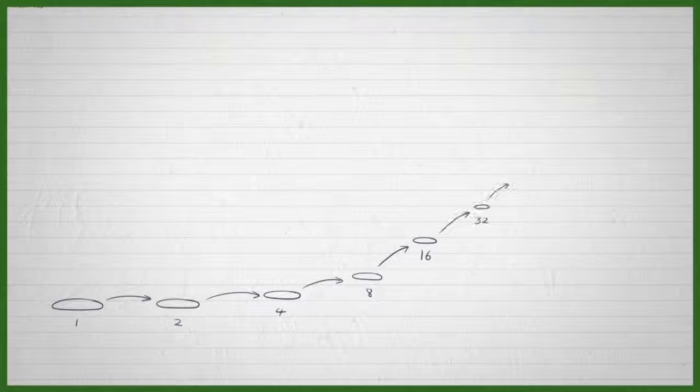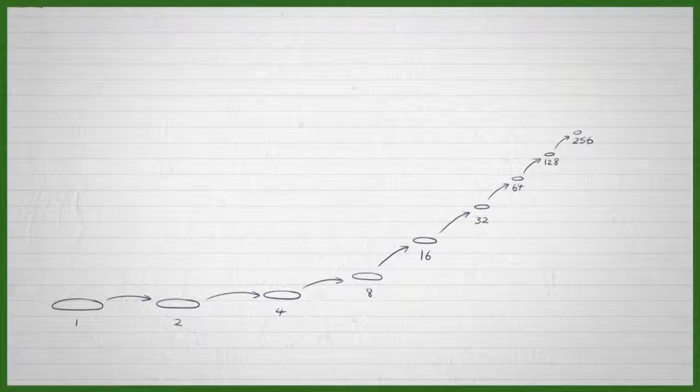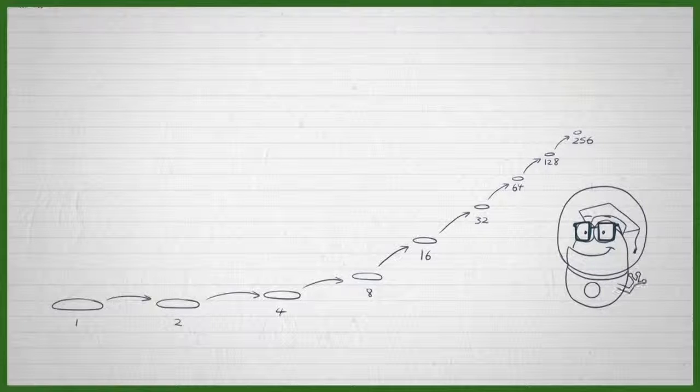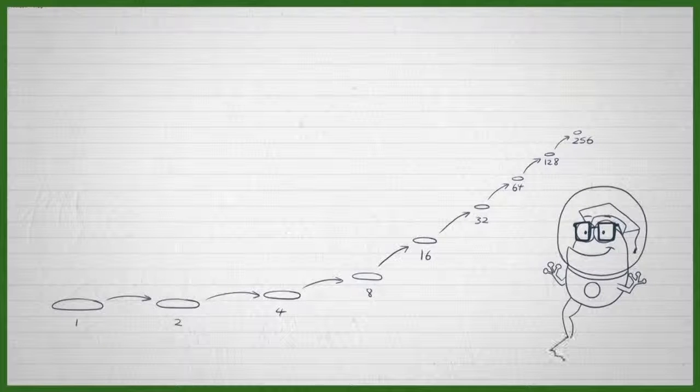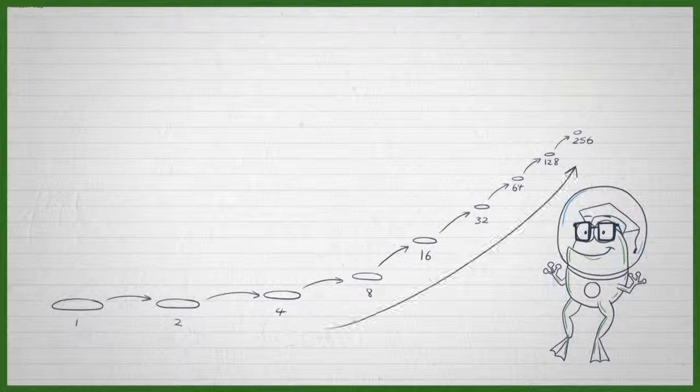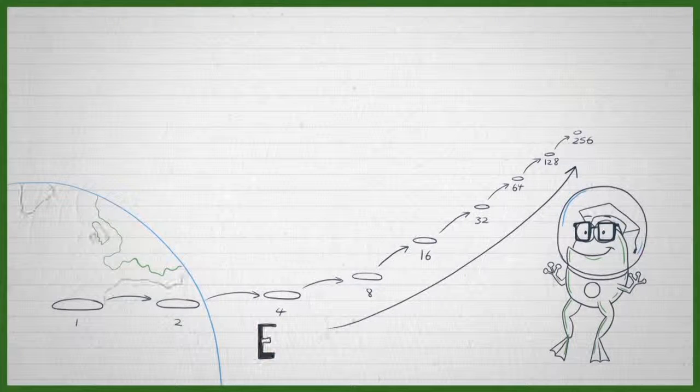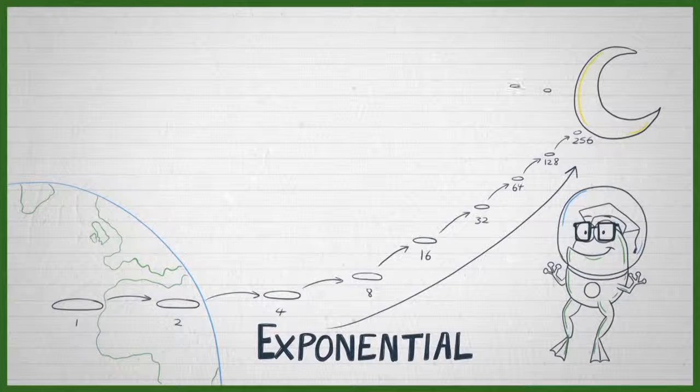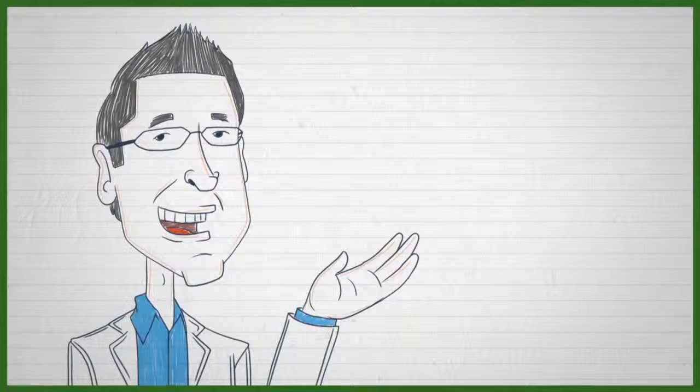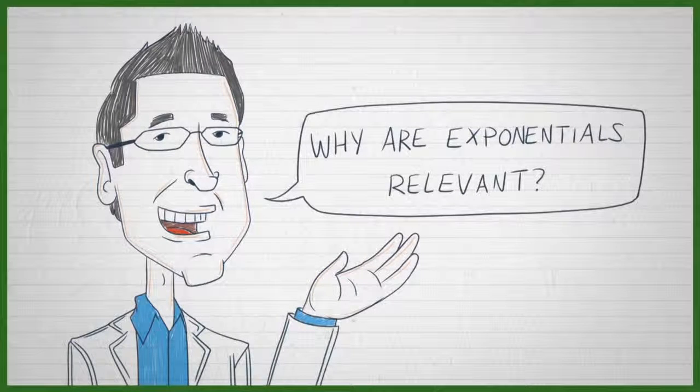If I take 20 steps in exponential space where each step is a doubling of the prior. Now it's 1, 2, 4, 8, 16, 32, 64, 128, 256. Each step I take doubles all of the steps that have been taken before. And guess what? 20 steps in exponential space gets us to? It gets us to the moon and back. I think it's fair to say that's not intuitive. But why is it relevant? Why even bring it up?